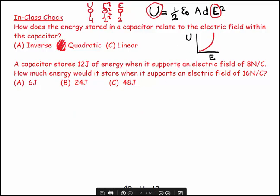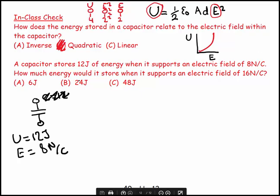Next - so that's one type of question I can ask, rather than having numerical values. And then another one I can do is a kind of ratio problem. So what I say is, okay, I have a capacitor and it stores - sorry, no - U is equal to 12 joules. A capacitor stores 12 joules of energy when it supports an electric field of 8, so E is equal to 8 newtons per coulomb. And then how much energy would it store when it supports an electric field of 16 newtons per coulomb?